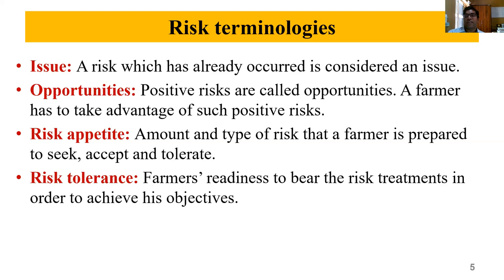Then 'opportunities': positive risks are called opportunities. The farmer has to look for opportunities and keep himself updated with all the latest technologies so that he can remain afloat in agricultural activity. In other sectors, income is rising because they are keeping themselves updated. If farmers don't keep themselves updated, they won't get higher income on par with other sectors.